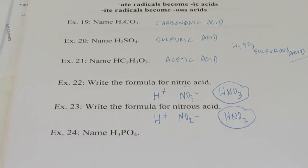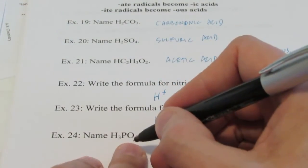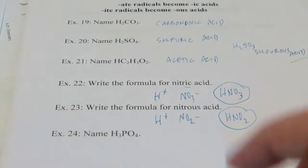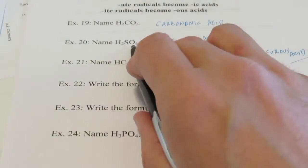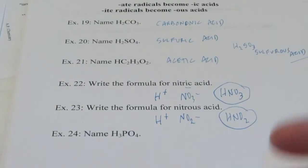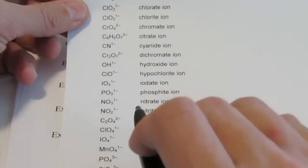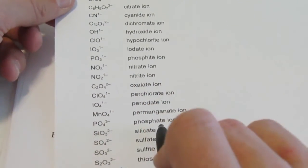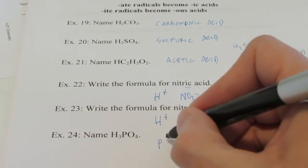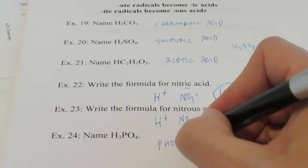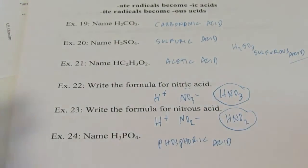How about H₃PO₄? Ternary acid for sure — starts with hydrogen and bonded to a polyatomic. Do you see why we call these oxyacids? They all have oxygen in them. PO₄ is called phosphate. -ate radicals become -ic acids, so this is called phosphoric acid.